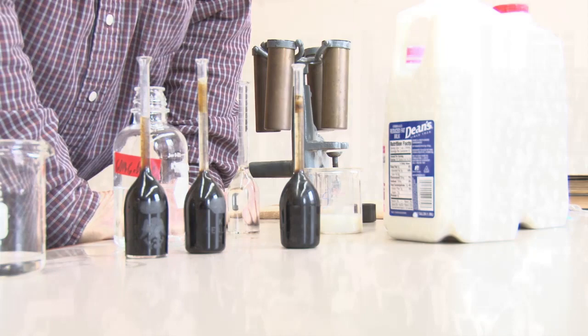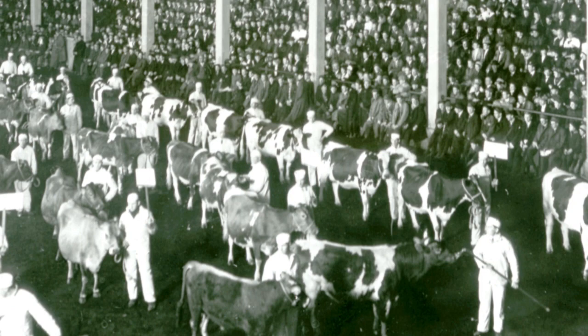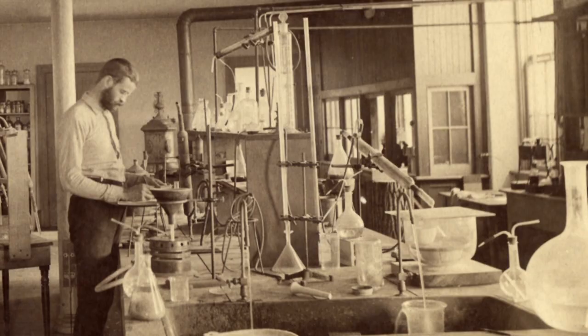Babcock would do this several times for each sample of milk. He would pass the information on to the herd manager, and it was useful in two ways. It allowed the herd manager to figure out which cows were giving the best milk. But also, Babcock's farmers could show this to the dairy who was buying their milk, and they would have evidence that the milk was good.